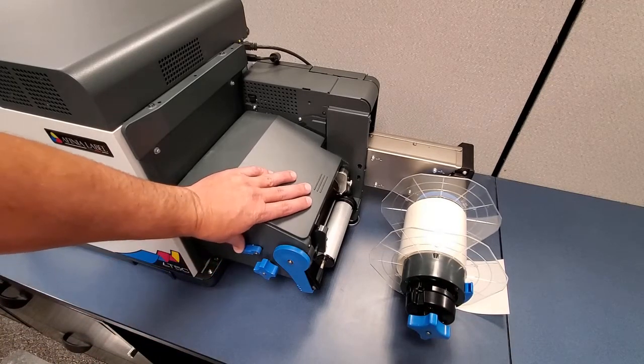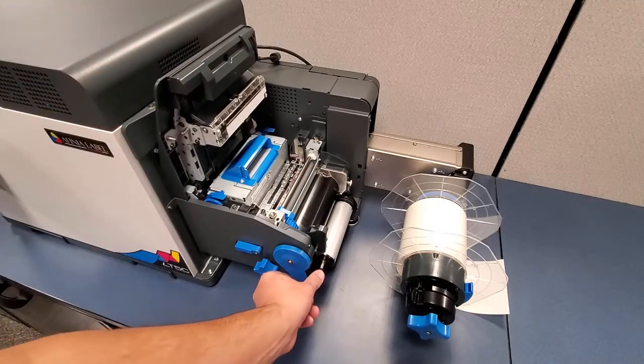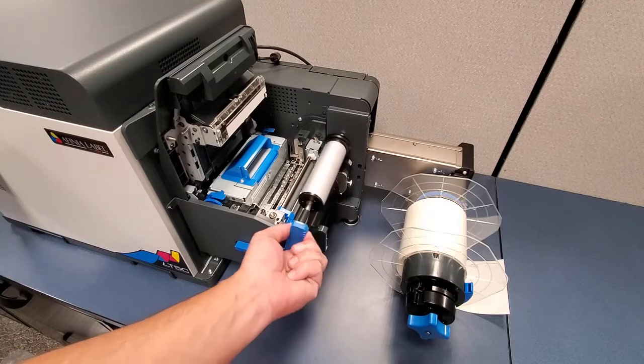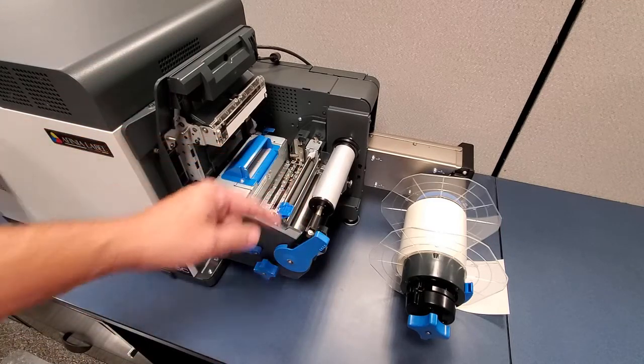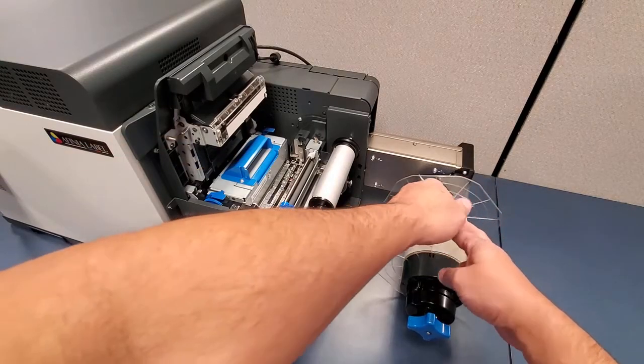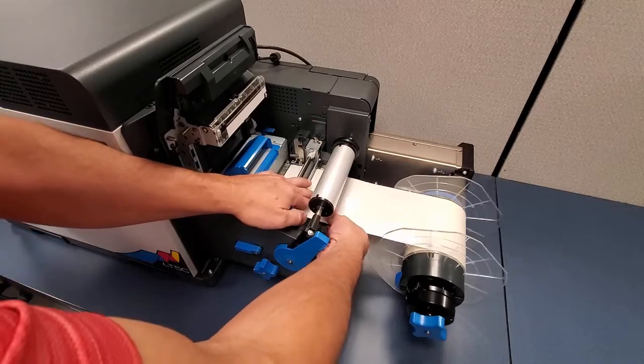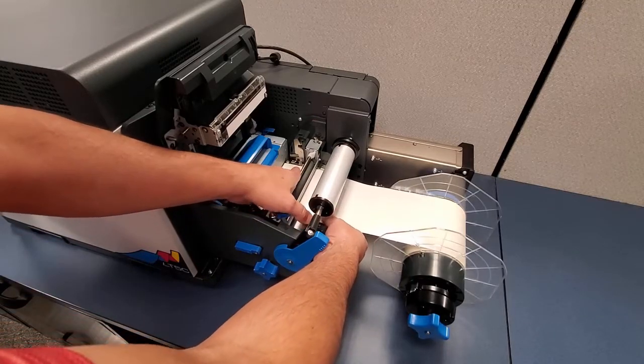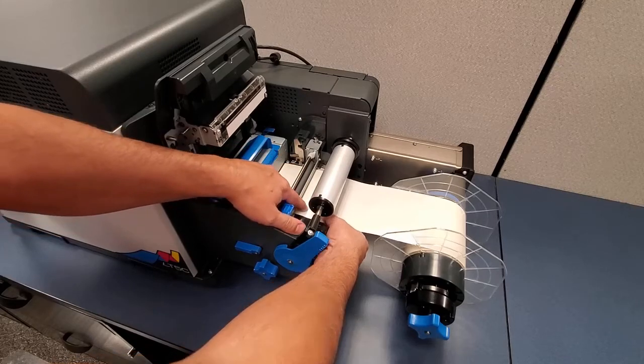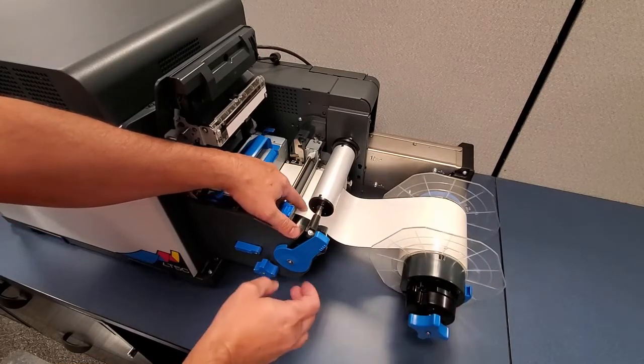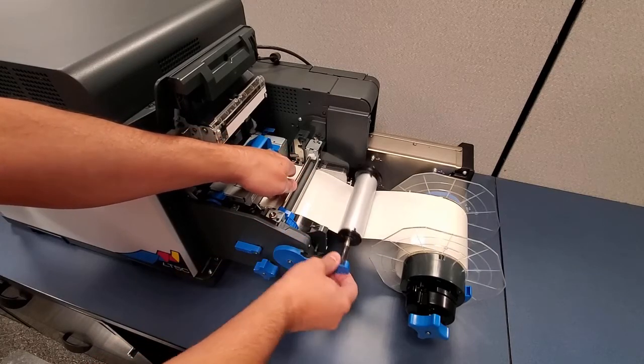Open the media door. Raise the tension bar. Lift the input roller. Insert the media, aligning it with the guide and the D-shaped guide pin. Lower the input roller and lower the tension bar.